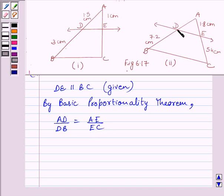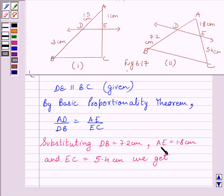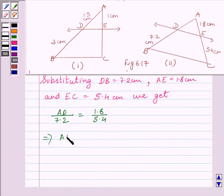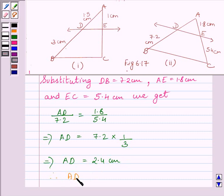Now we have to find AD. We are given DB is equal to 7.2 cm, AE is equal to 1.8 cm, and EC is equal to 5.4 cm. We will substitute the corresponding values of DB, AE, and EC into the expression. Substituting these values, we get AD upon 7.2 is equal to 1.8 upon 5.4. This implies AD is equal to 7.2 multiplied by 1.8 upon 5.4, which gives AD is equal to 2.4 cm.